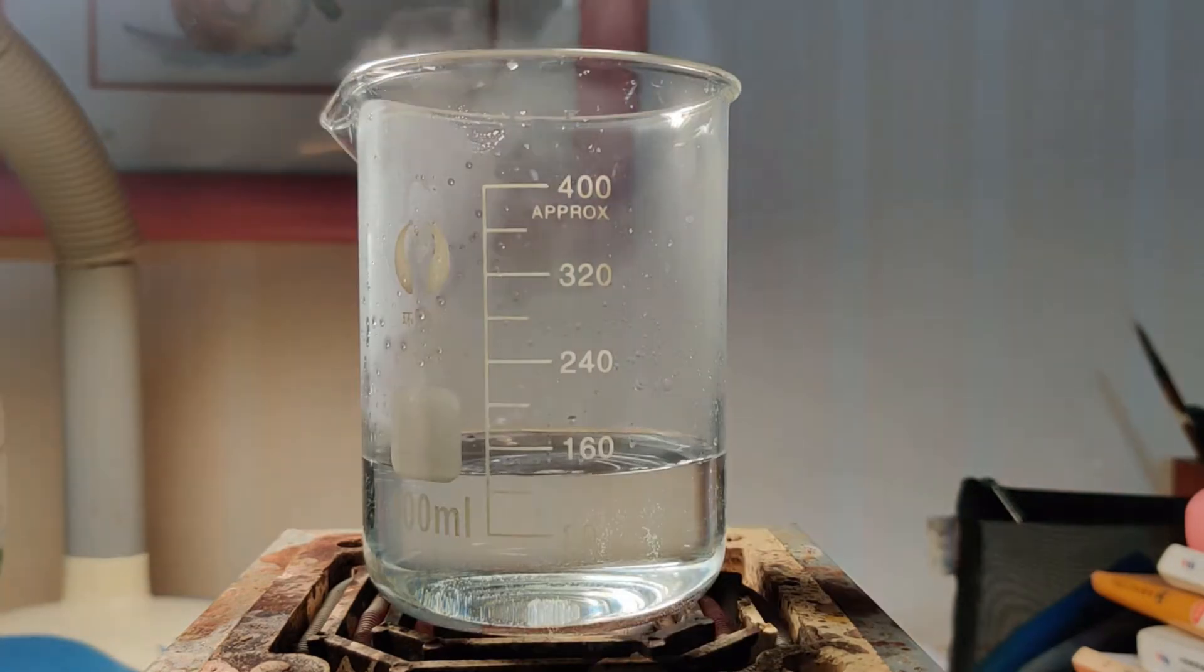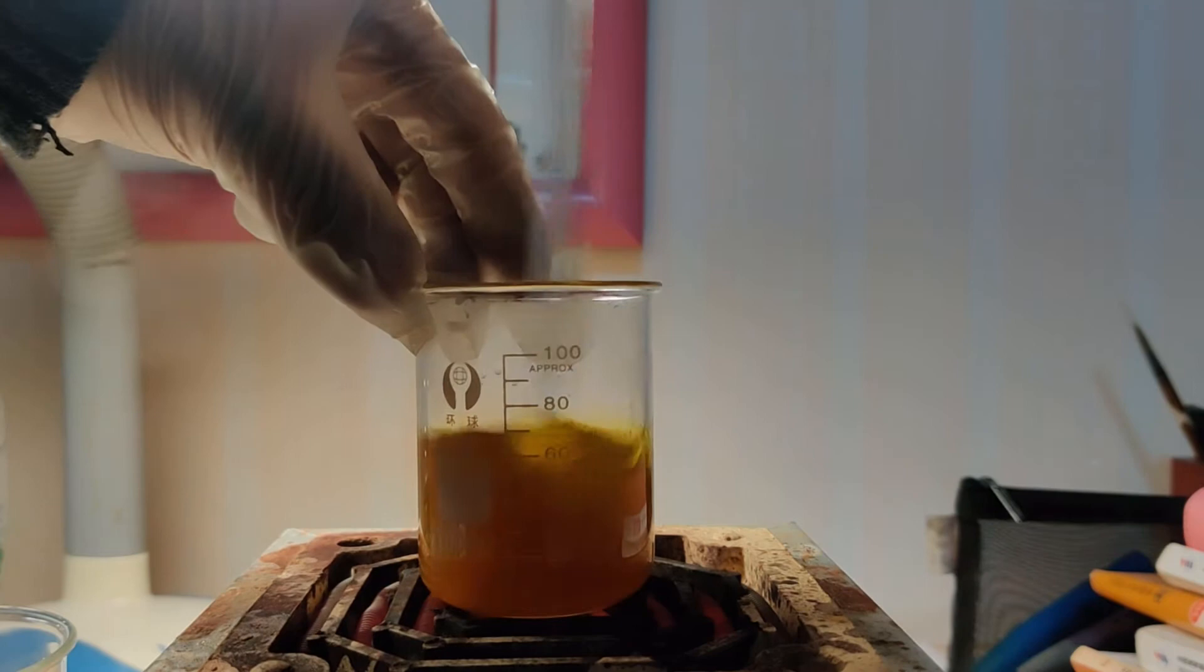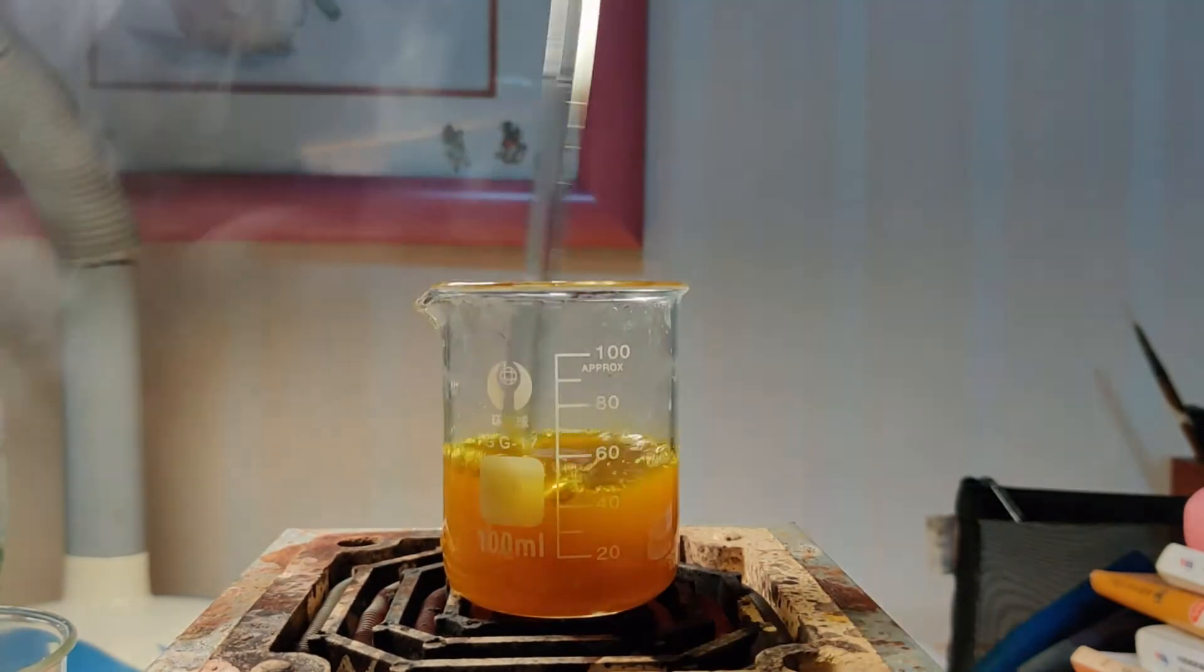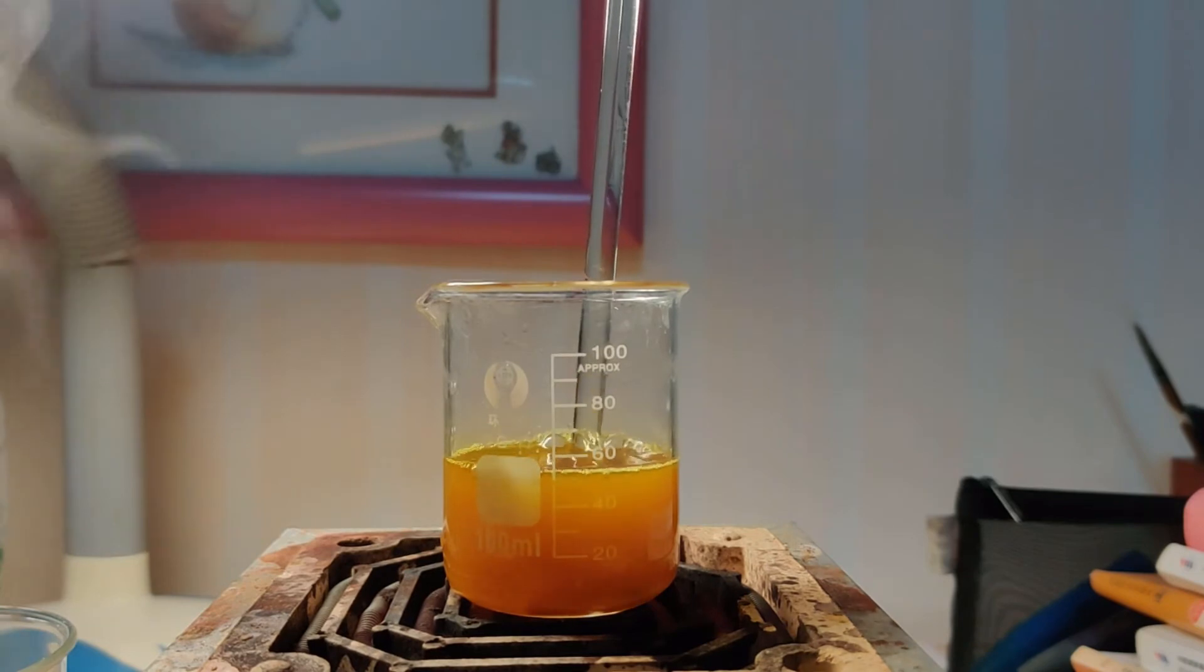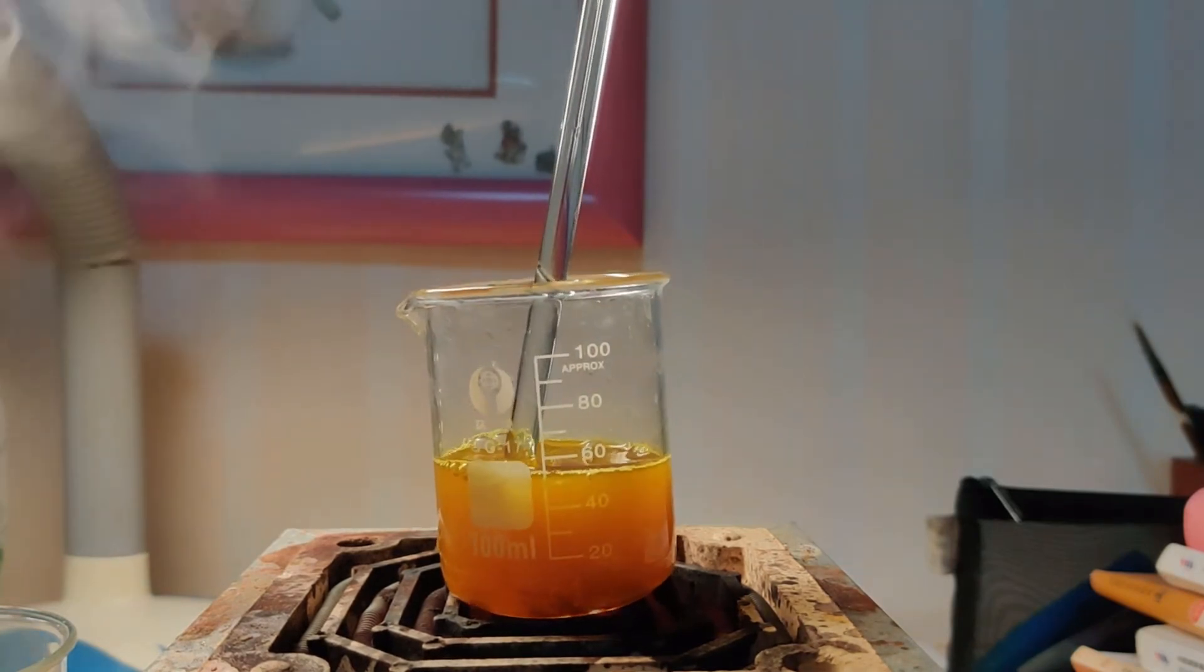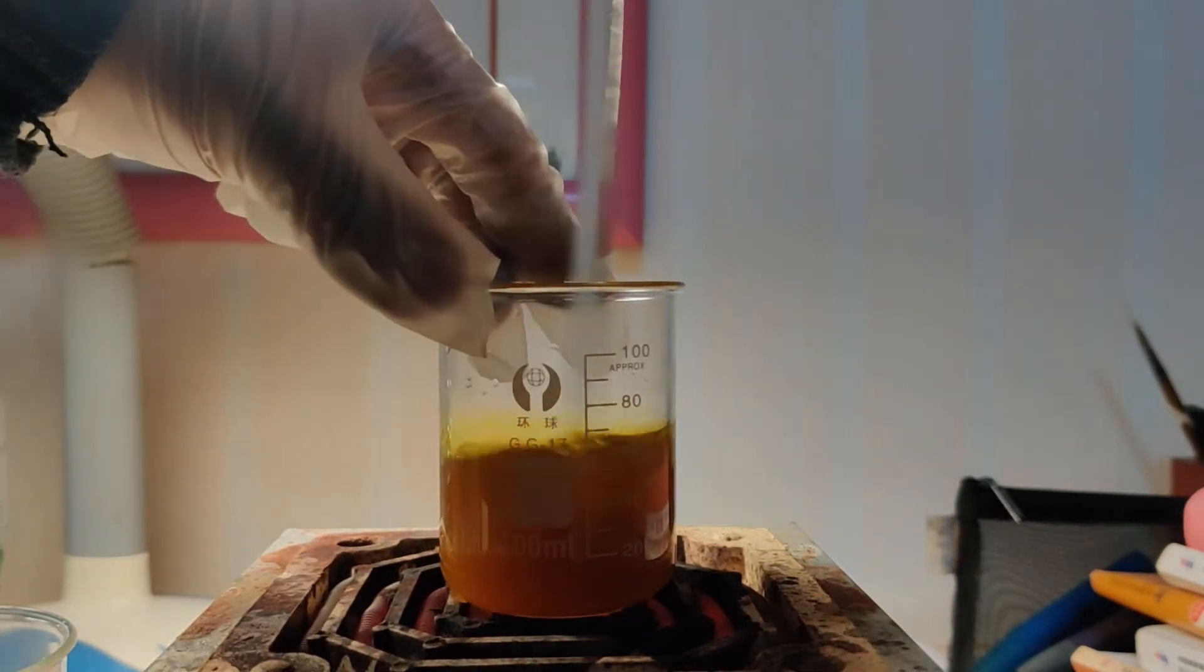As you can see, the ferric trichloride solution is extremely cloudy, and that's because ferric ion experiences serious hydrolysis and becomes ferric hydroxide. It makes the solution look pretty bad, but it is actually fine when reacting with the oxalate.